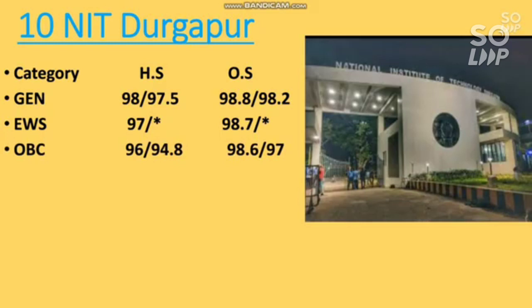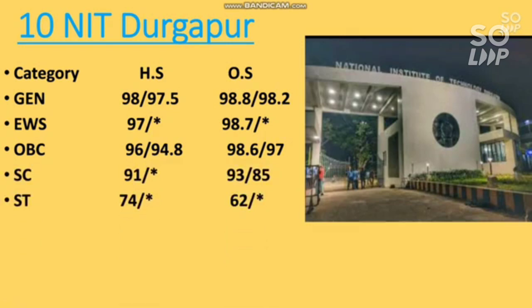For OBC it is 98.6 for other state male, for SC it is 93, and for ST it is 62 percentile. You can check home state cutoffs sidewise and also the female cutoff after the slash.